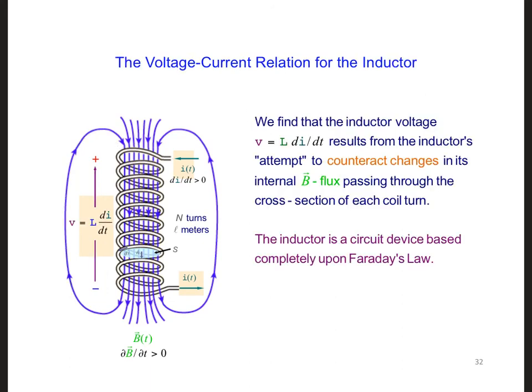So, in summary, we find that the inductor voltage, V, is equal to L DI-DT. This results from the inductor's attempt to counteract changes in its internal B-flux, which comes from the increasing current, passing through the cross-section of each coil turn. So, the inductor is a circuit device that's based completely on Faraday's Law.